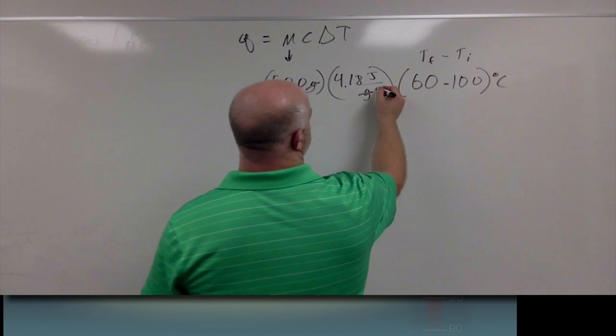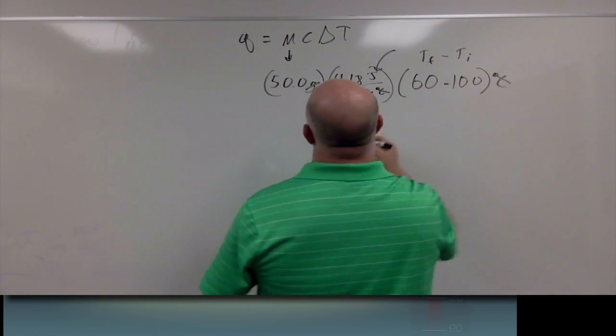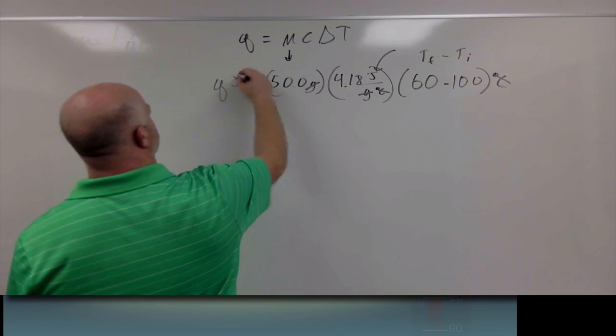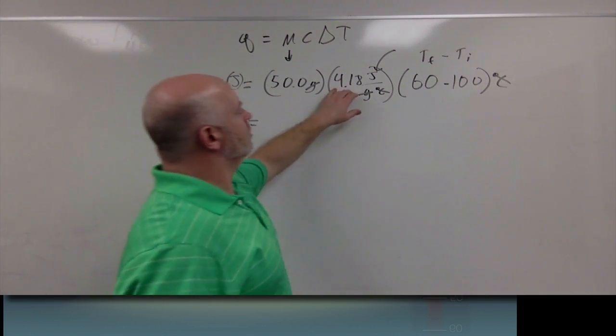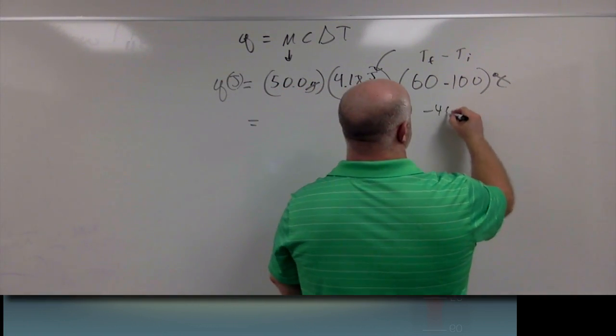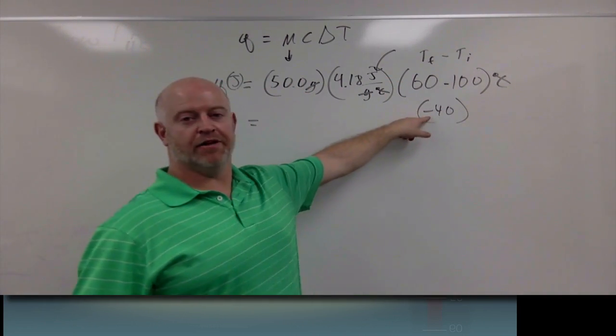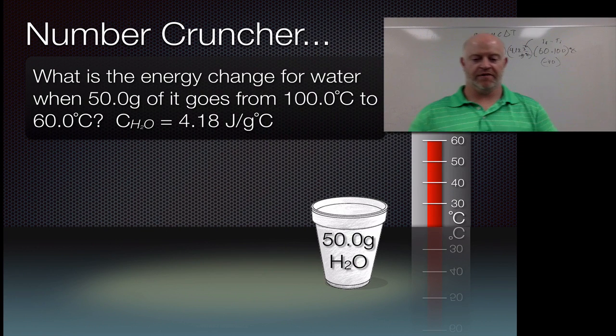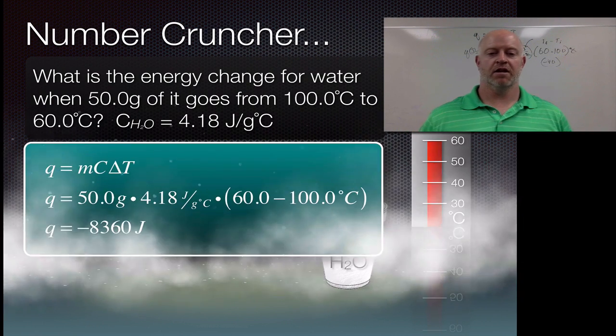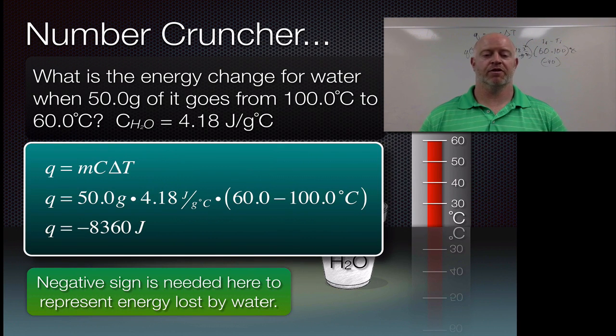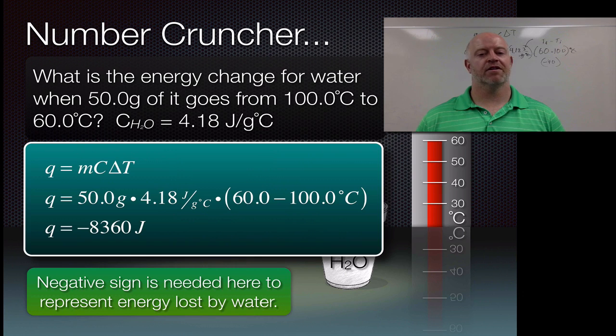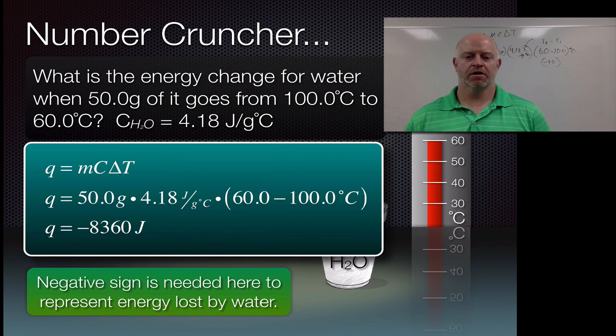Now mathematically, grams are going to cancel, degrees C are going to cancel, and we're going to be left with joules, because we're solving for Q, which should be in joules. So if we plug these numbers in now, we take the 50 times 4.18 times basically a negative 40 here. We have a negative value, so we should end up with a negative number here, because we should be having a process of exothermic or leaving reaction out. So we do that, we plug our math in, we have a negative 8,360 joules, which then gives us our value for Q. Keep in mind, we need to have that negative sign there to represent that the water is losing energy by going through this process, or we have an exothermic process happening here.